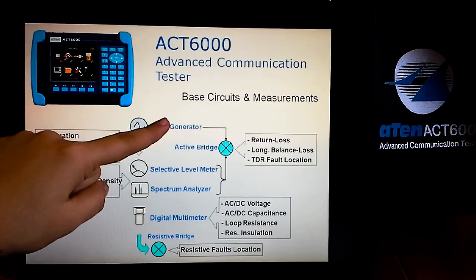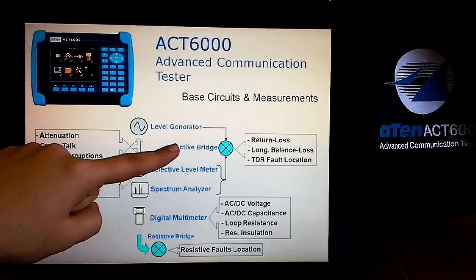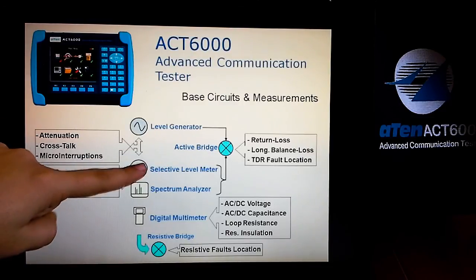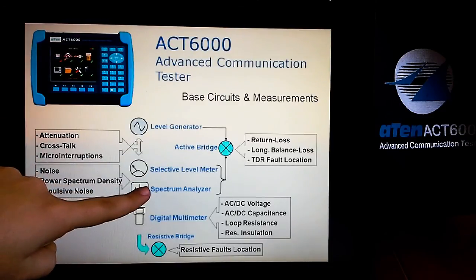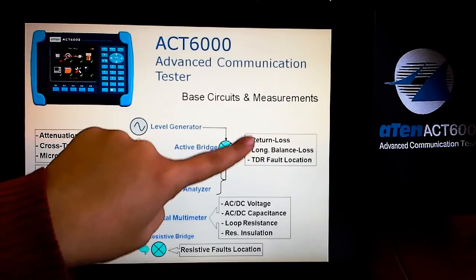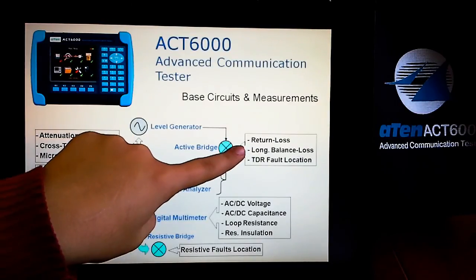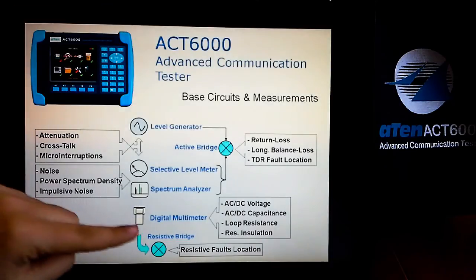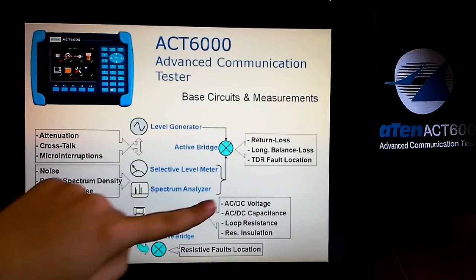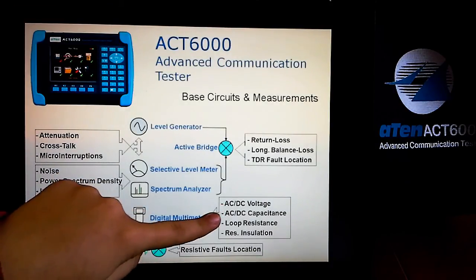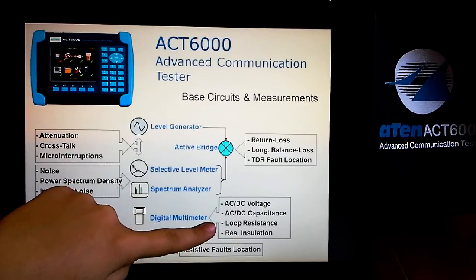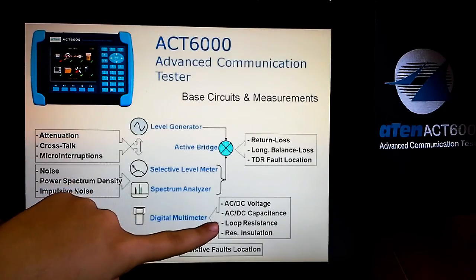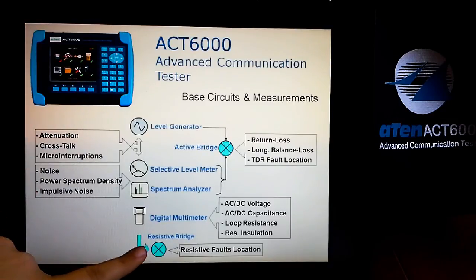From the level generator, active bridge, selective level meter, and spectrum analyzer, you can check return loss, longitudinal balance loss, and TDR fault location. From the digital multimeter, you can check AC/DC voltage, AC/DC capacitance, loop resistance, and resistance in solution. From the resistive bridge, you can check resistive fault locations.